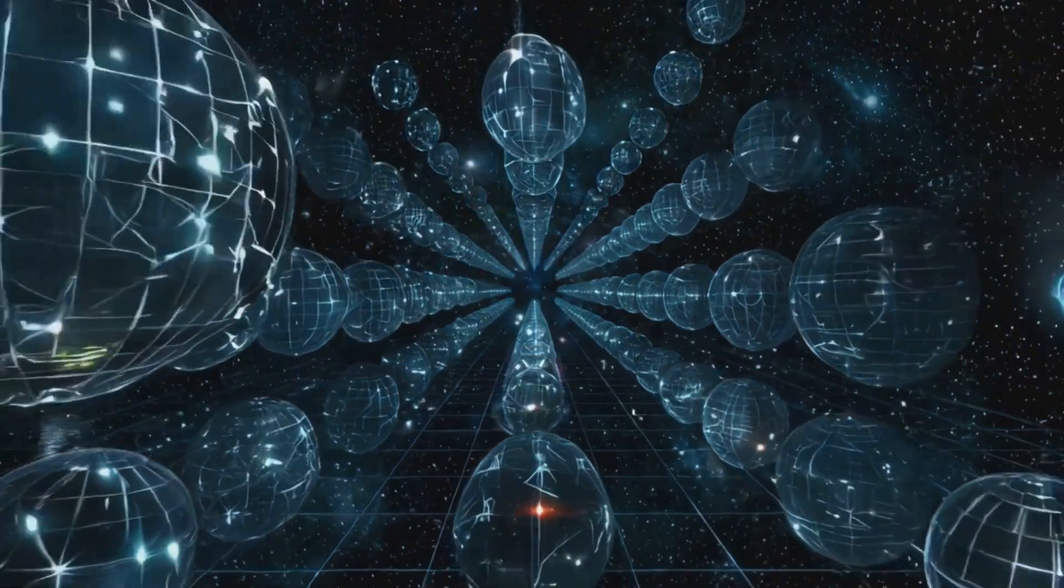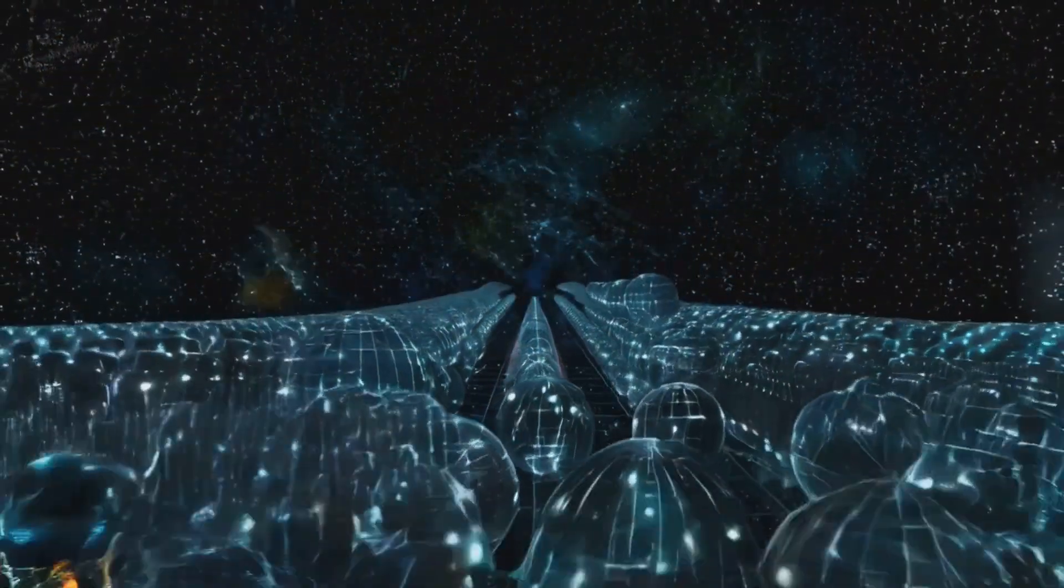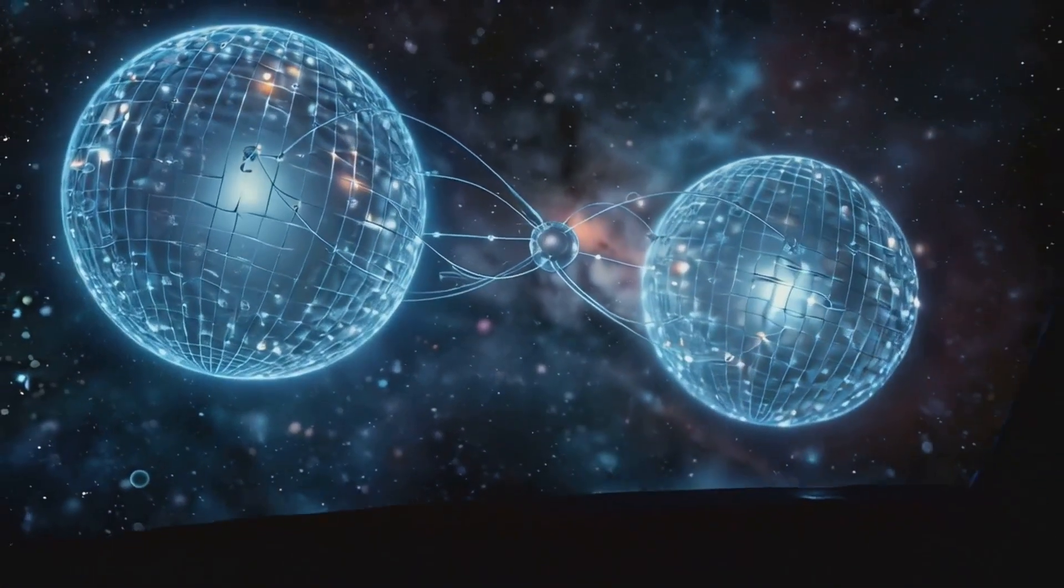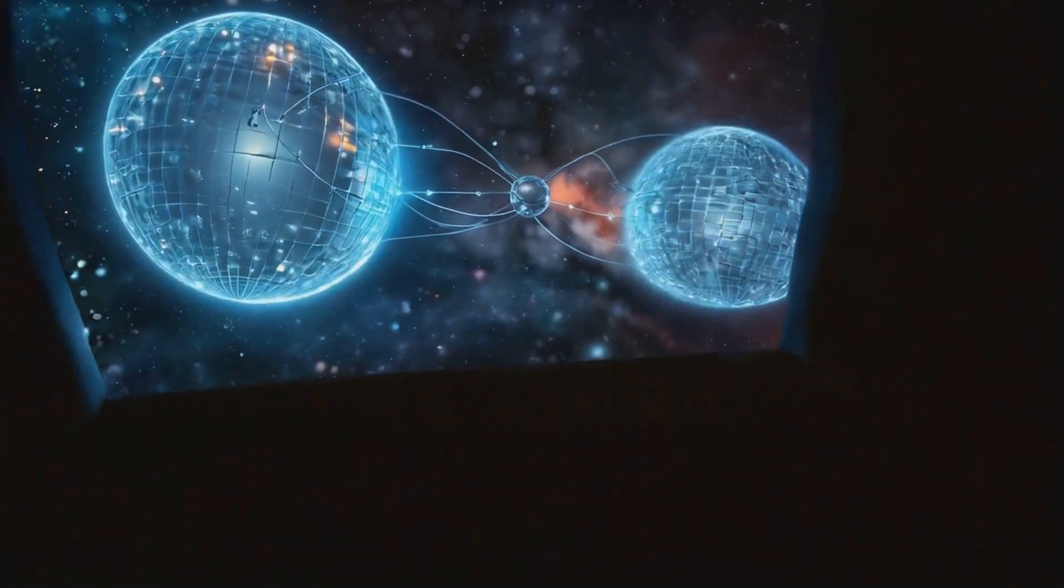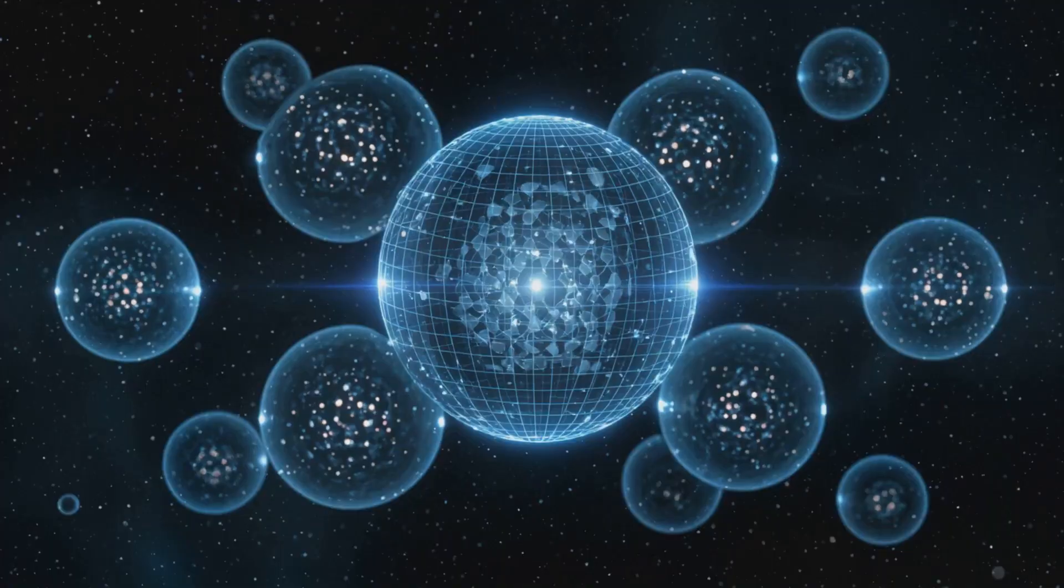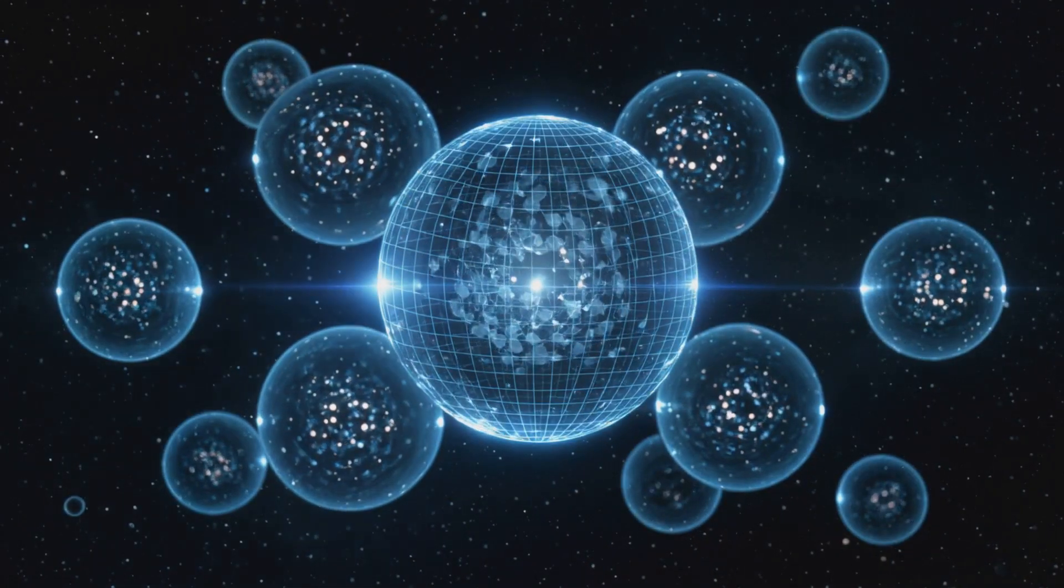Now imagine not just a single Bloch sphere, but an infinite array of them, each representing a point in spacetime. These spheres are entangled, meaning they do not exist independently, but instead reflect and interact with one another instantaneously. Their relationship is not linear, but holographic.